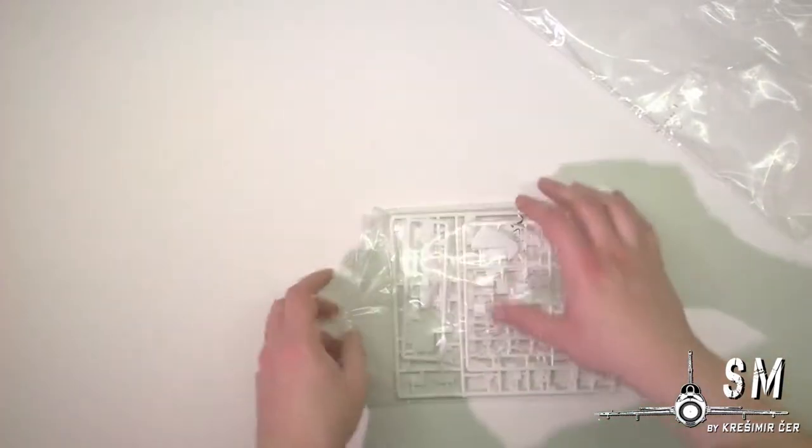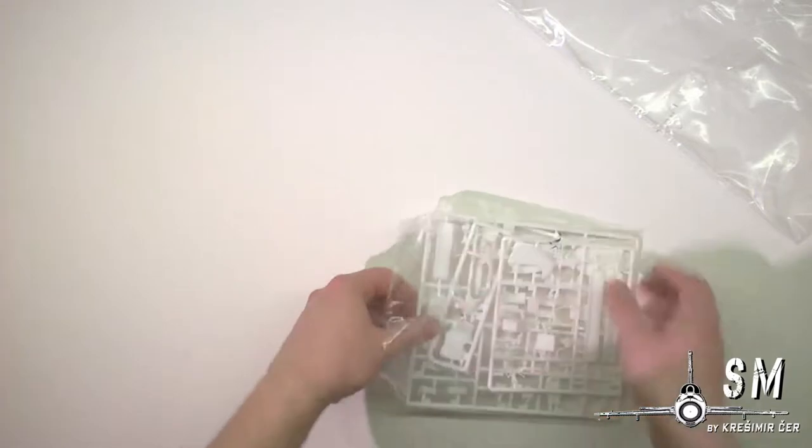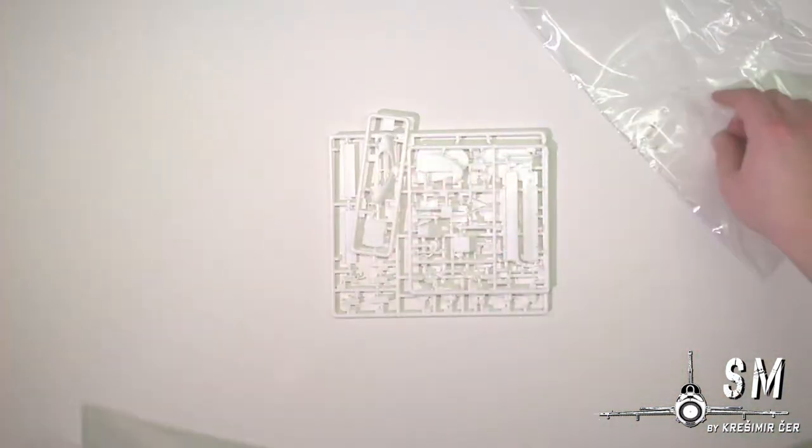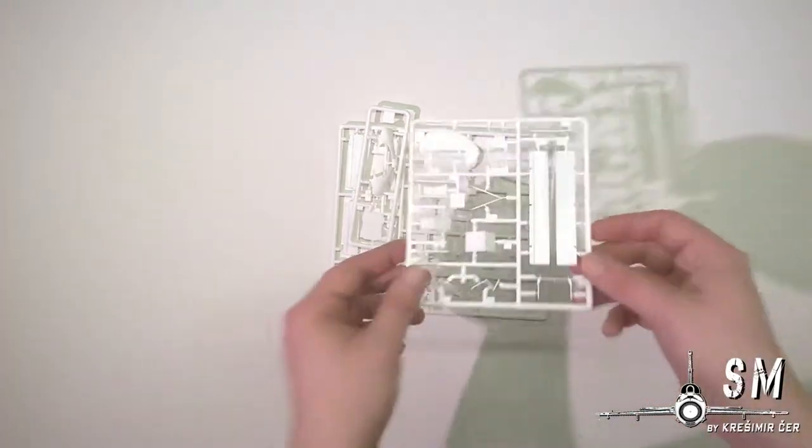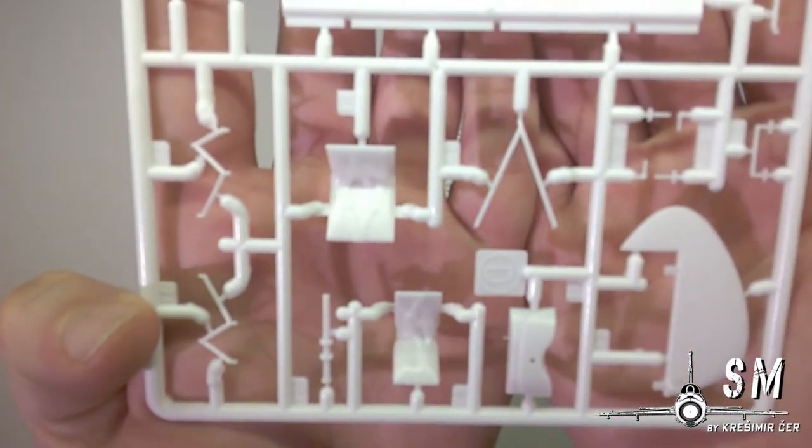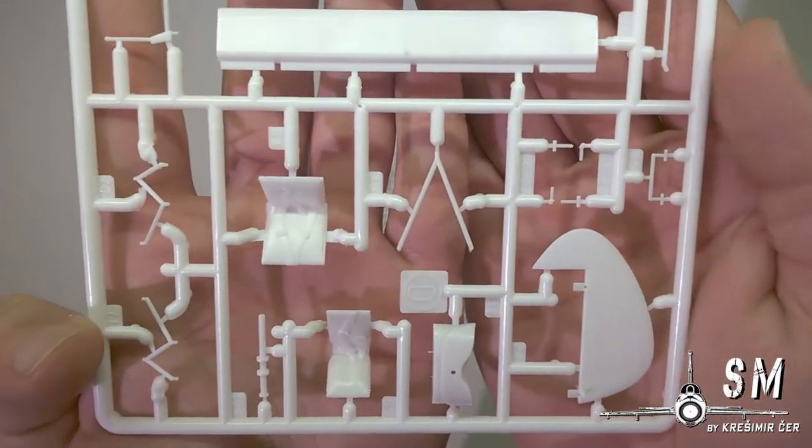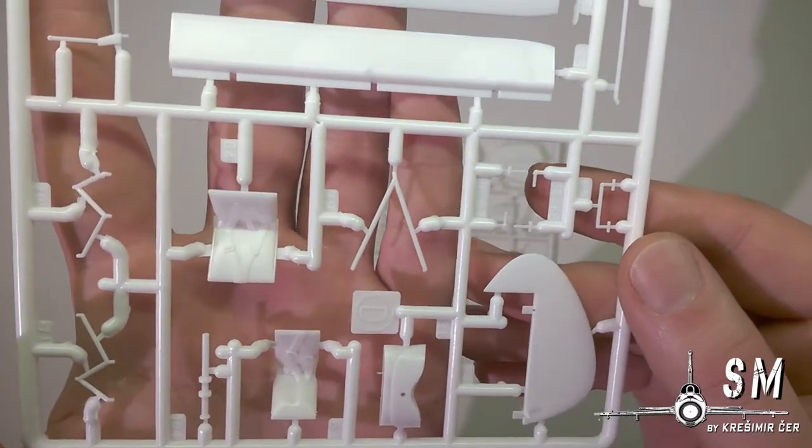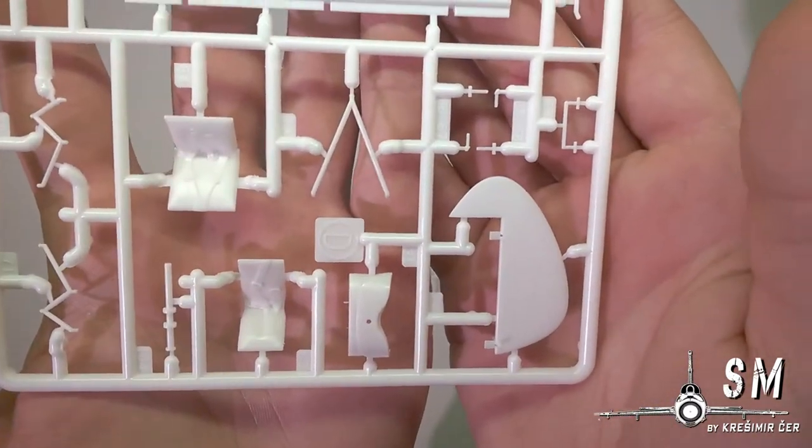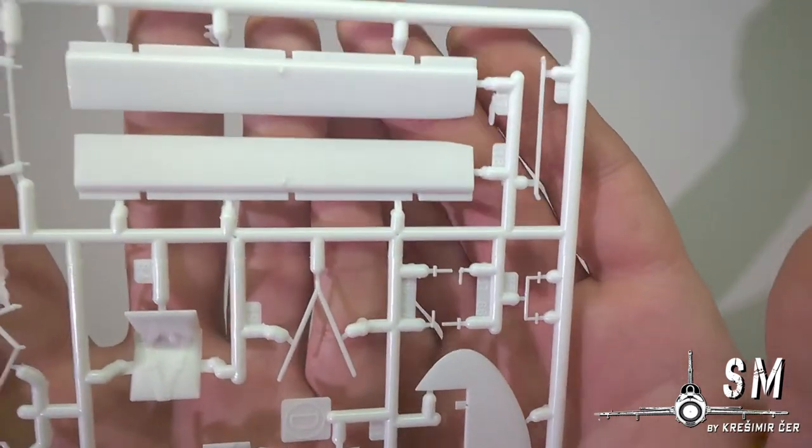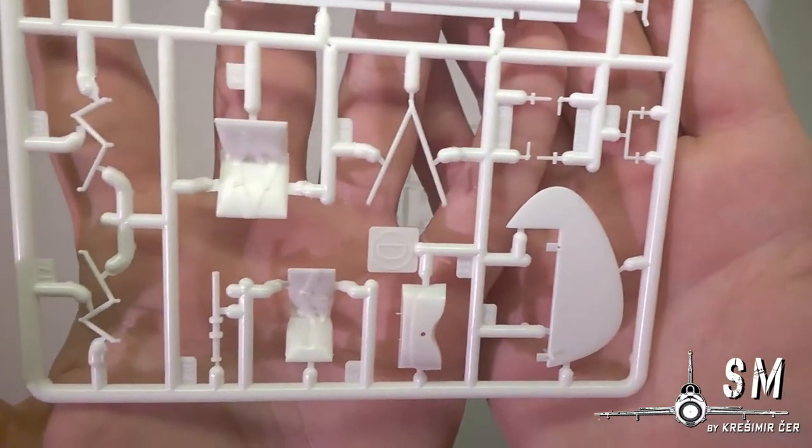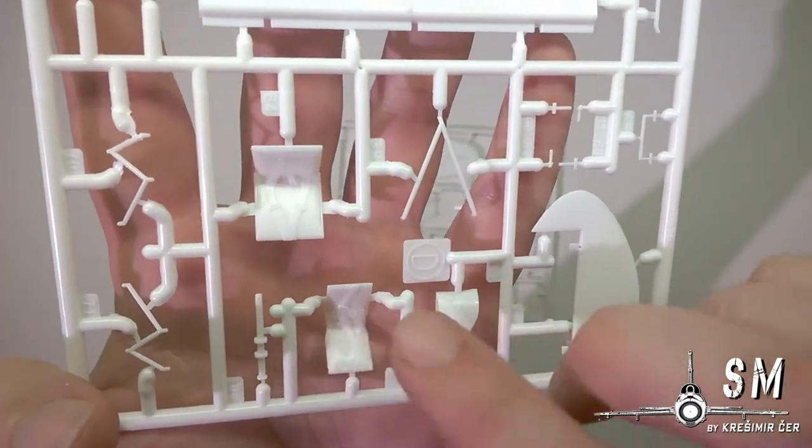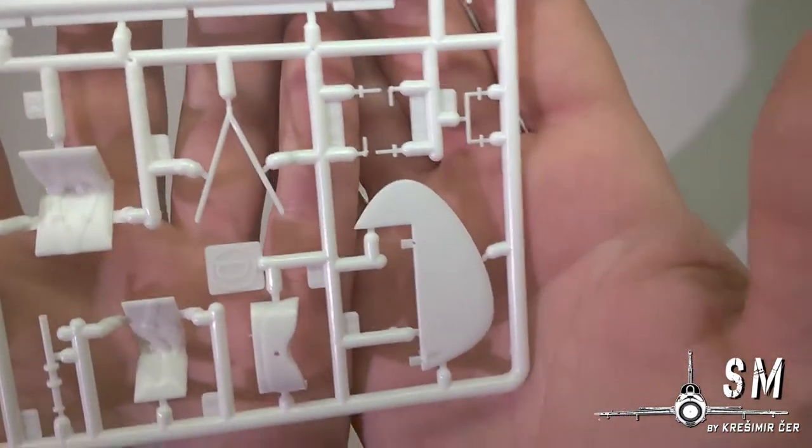We have another bag. We have our seats with seat belts molded into the seat. Not a big fan of that, but it will be easy to sand and remove them and make them maybe from scratch, building from some masking tape or some other method, whichever you prefer. It will be more realistic if you remove these and make them on your own or buy them.